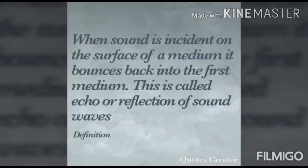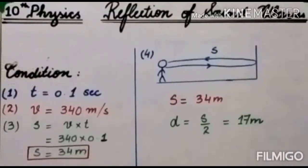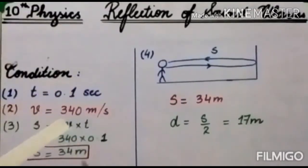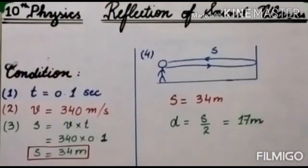Reflection of sound: when sound is incident on the surface of a medium it bounces back into the first medium — this is called reflection of sound, or echo. The condition for a clear echo is that our mind retains a sound for 0.1 seconds. If the reflected sound returns within 0.1 seconds it mixes with the original sound, but if it returns after 0.1 seconds we hear it separately. At the normal speed of sound — 340 m/s — using S = vt: S = 340 × 0.1 = 34 meters. So the sound must cover at least 34 meters before returning to our ear.